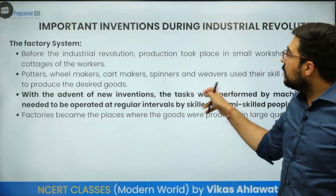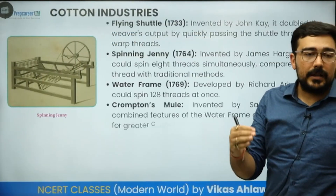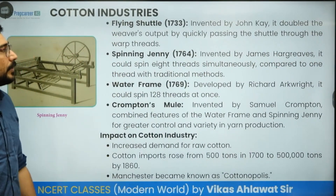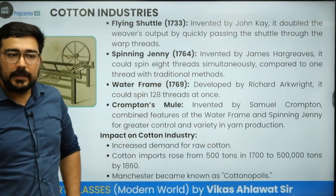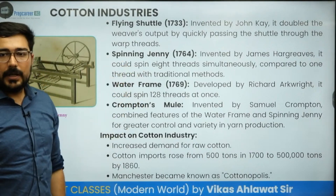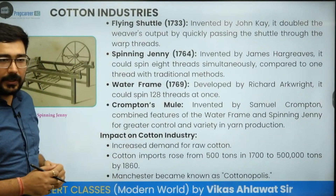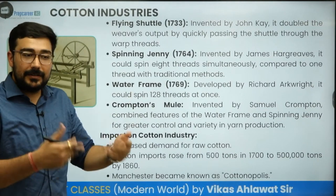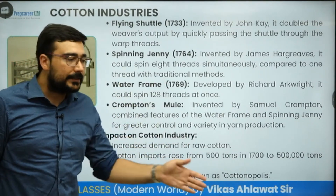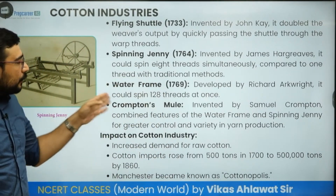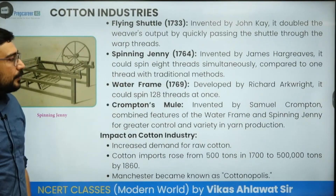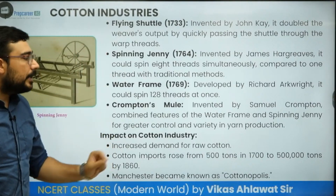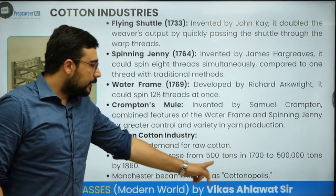Some very important inventions were also made. In the cotton industry, one of the most famous first inventions was the flying shuttle, invented by John Kay — it doubled the weaver's output. Second came the spinning jenny, invented by James Hargreaves — it could spin 8 threads simultaneously, dramatically increasing output. Then came the water frame, developed by Richard Arkwright — it could spin 128 threads at once. Then Crompton's mule, which helped in yarn production.